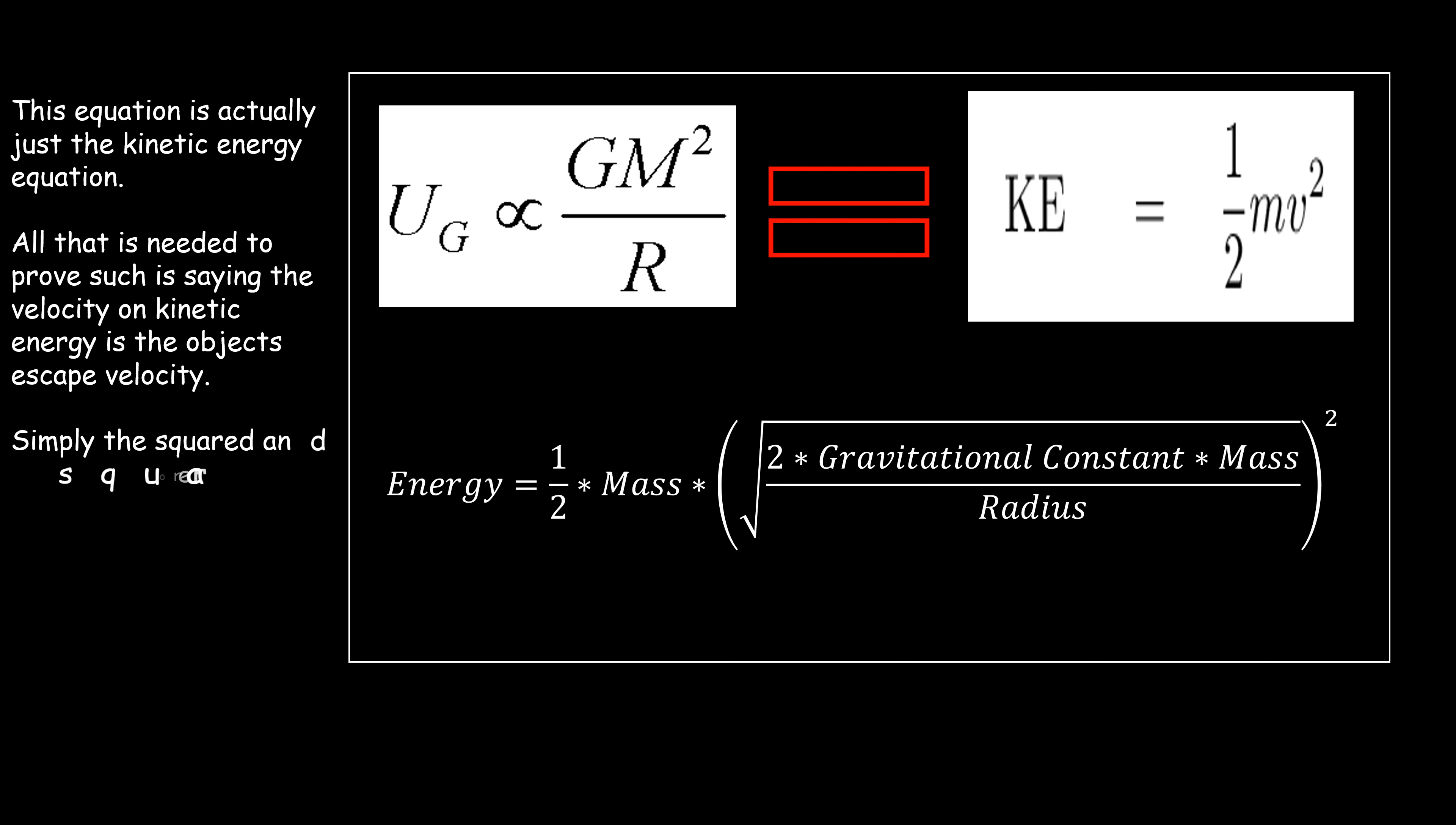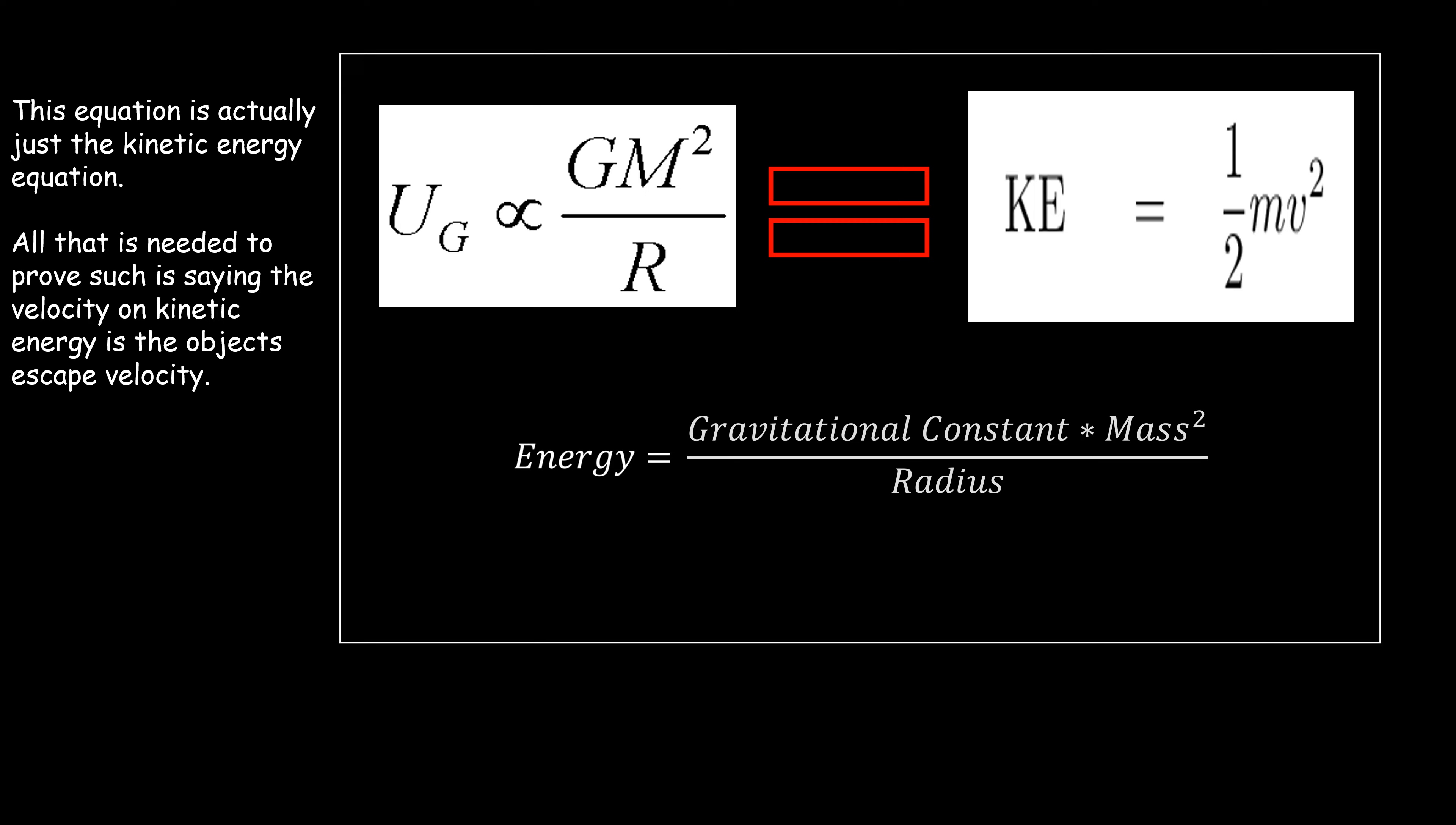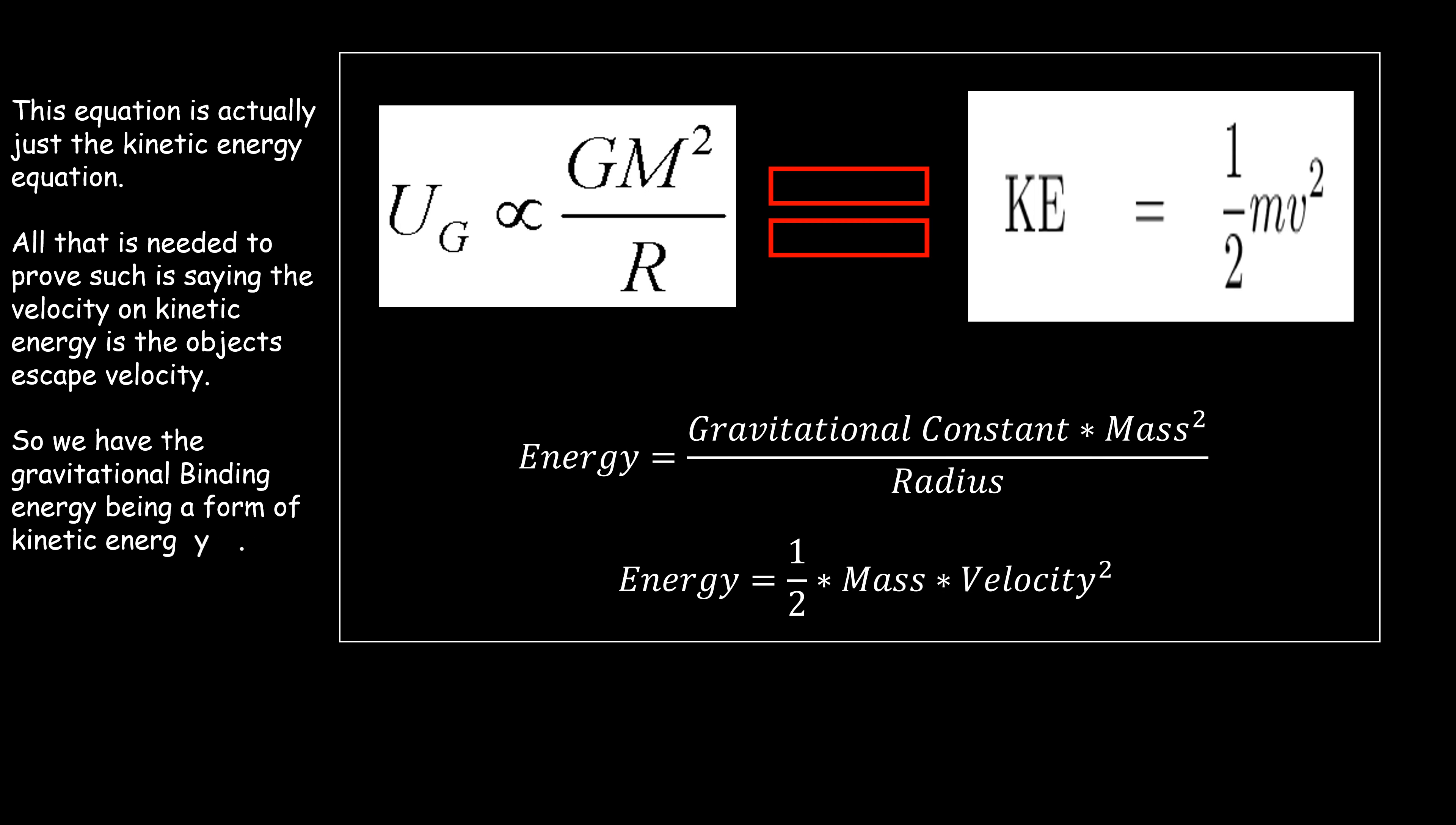Now we need to just do some simplification, starting with simplifying the square root and the squared within the equation. The next two things to simplify are quite simple, so let's do them together. Simplify the half and the times two to make absolute nothing whatsoever, and then the mass and the mass to make the mass squared. This shows us that our gravitational binding energy is equivalent to that of kinetic energy.